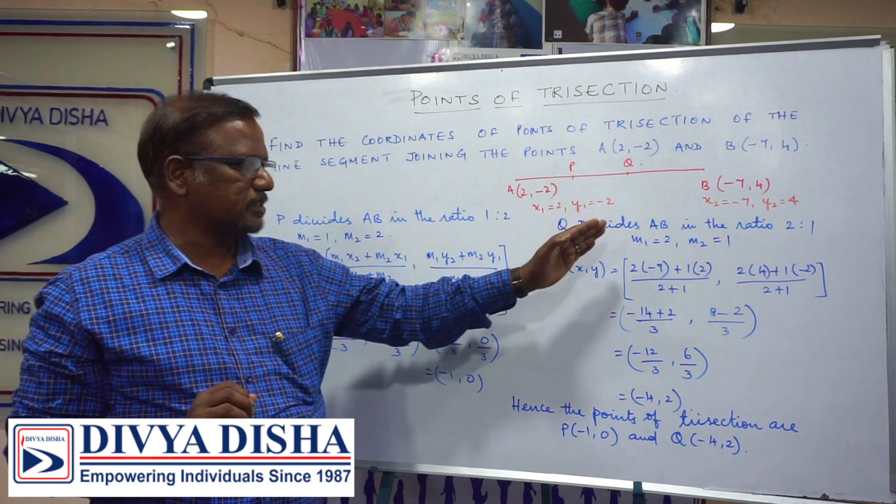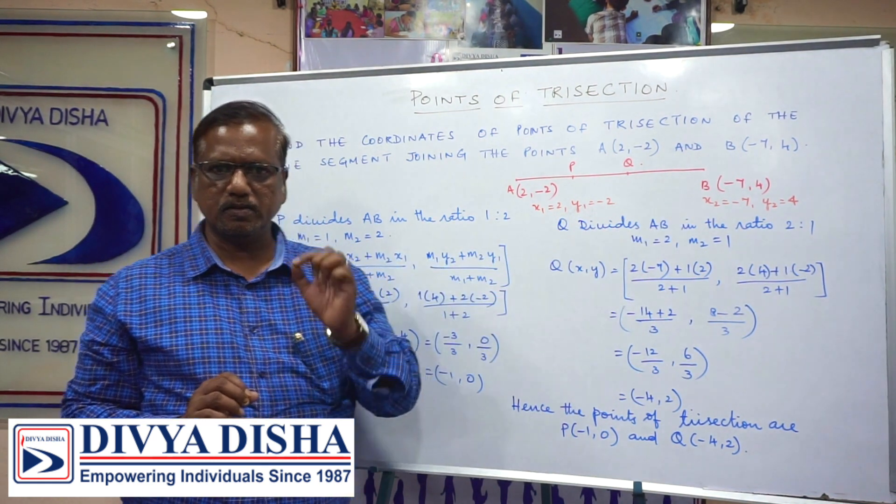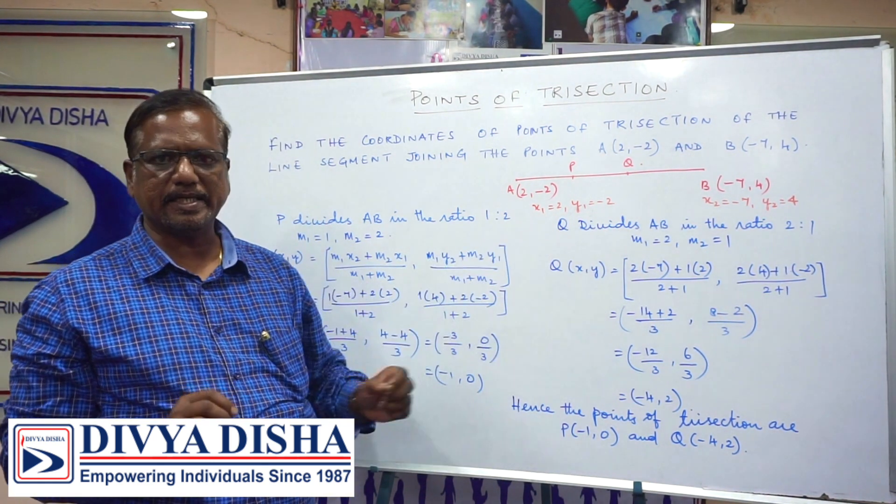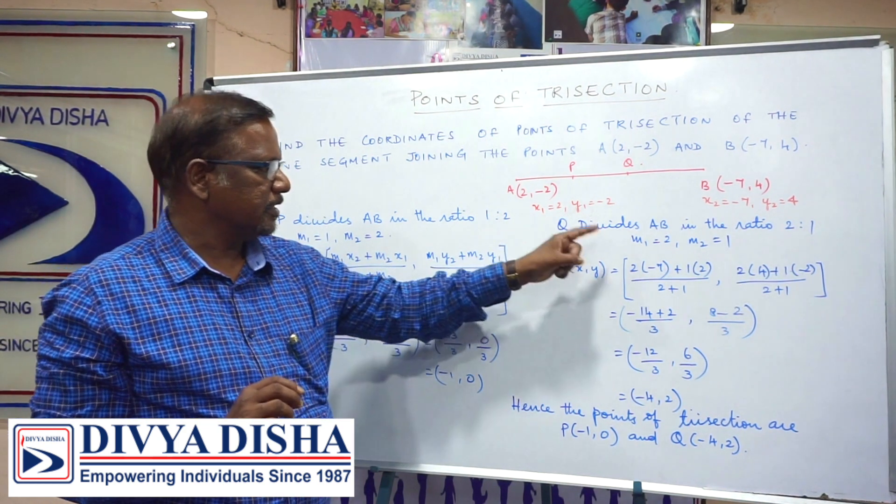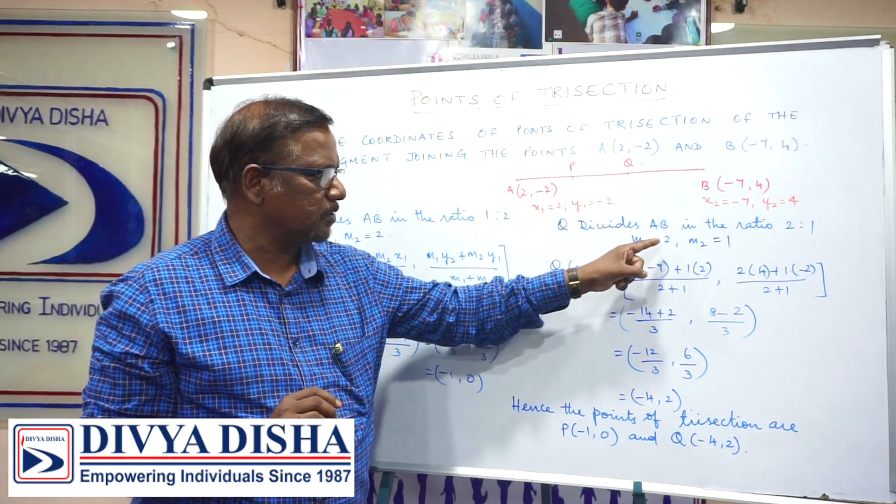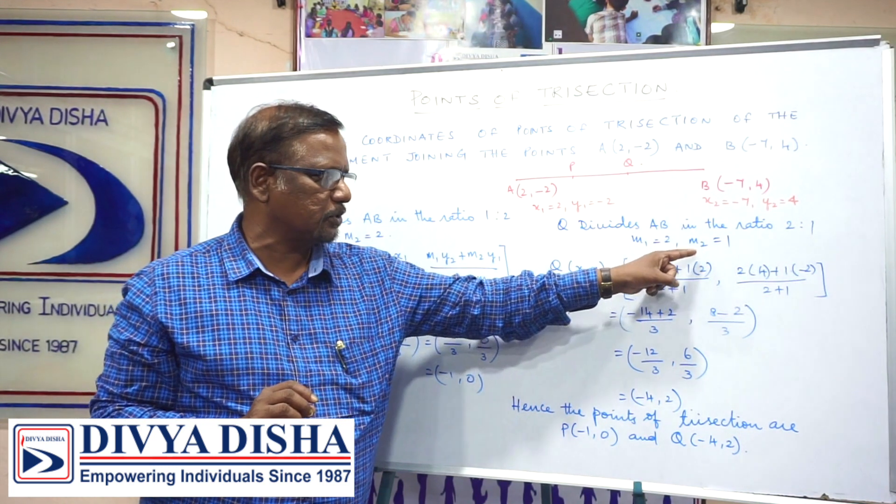Q divides AB in the ratio 2 is to 1. Don't forget this statement is a must. Here m1 will be 2 and m2 is equal to 1.